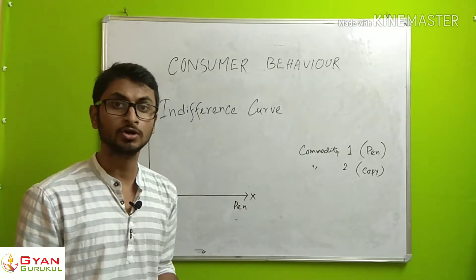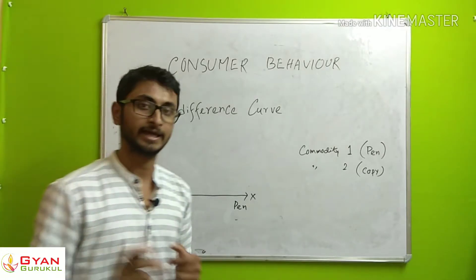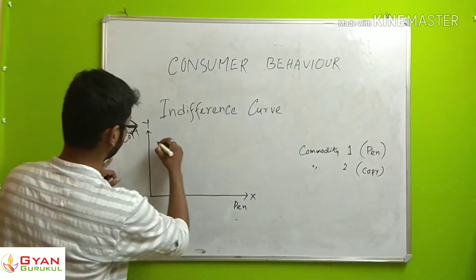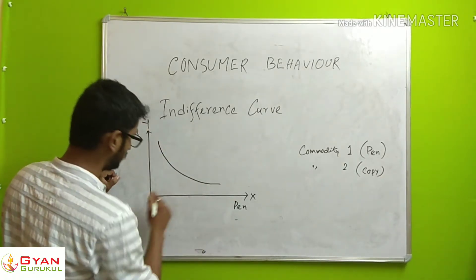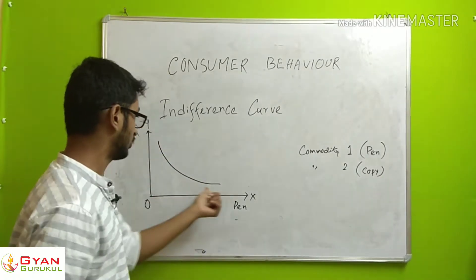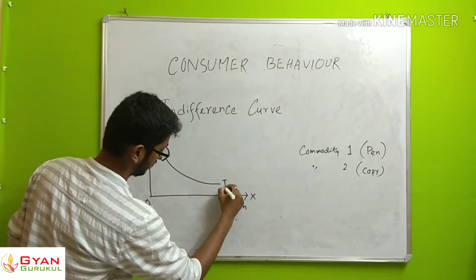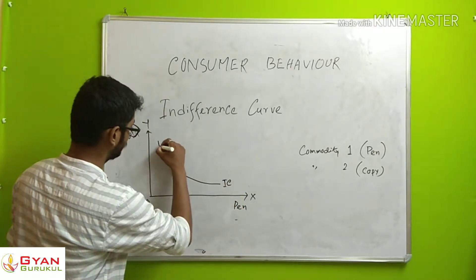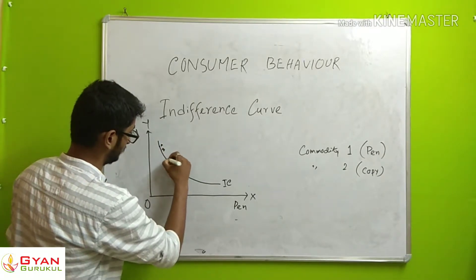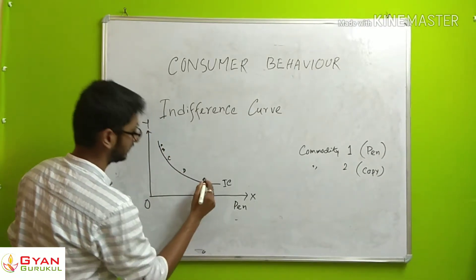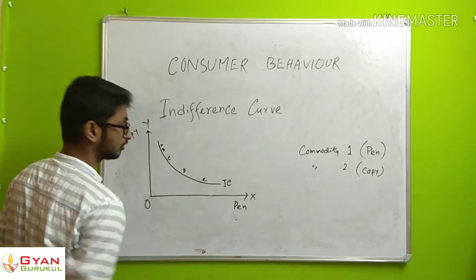Commodity X and amount — we label combinations A, B, C, D, E. These are five different combinations on the indifference curve. The consumer gets the same satisfaction or utility from each of these bundles.